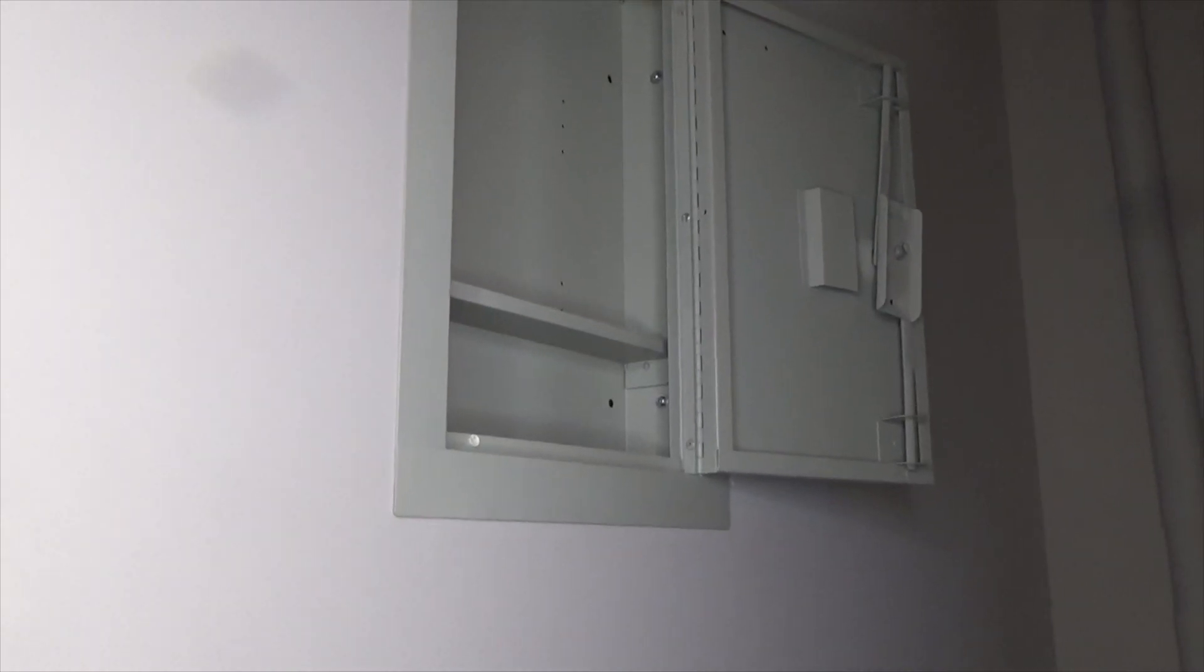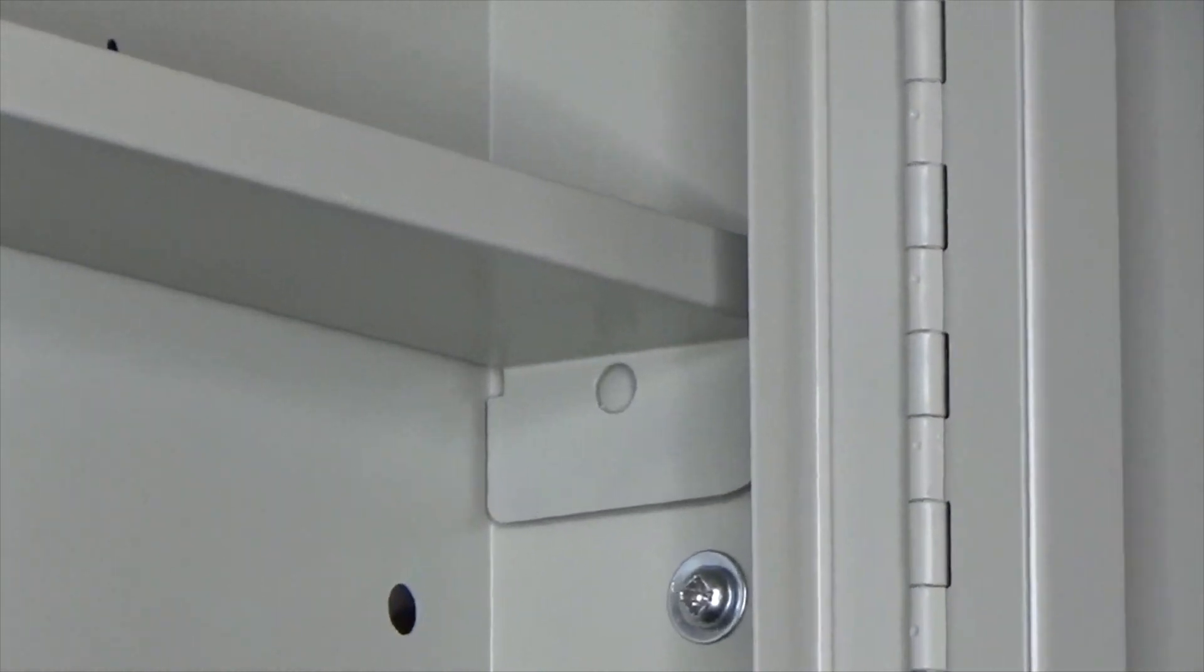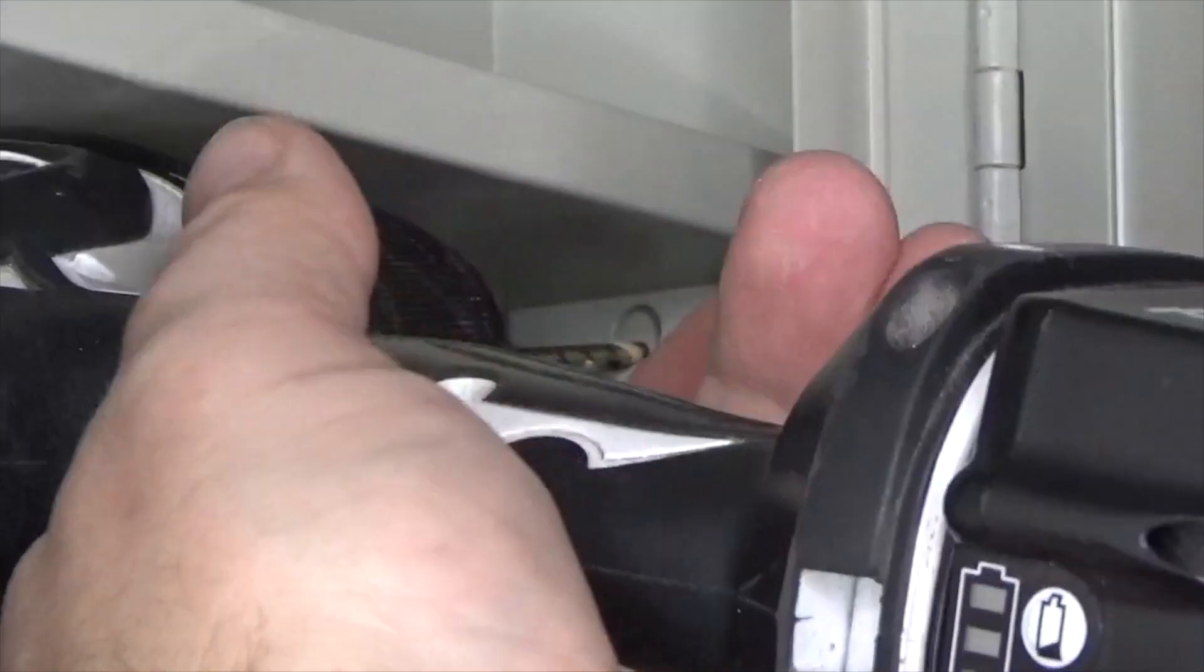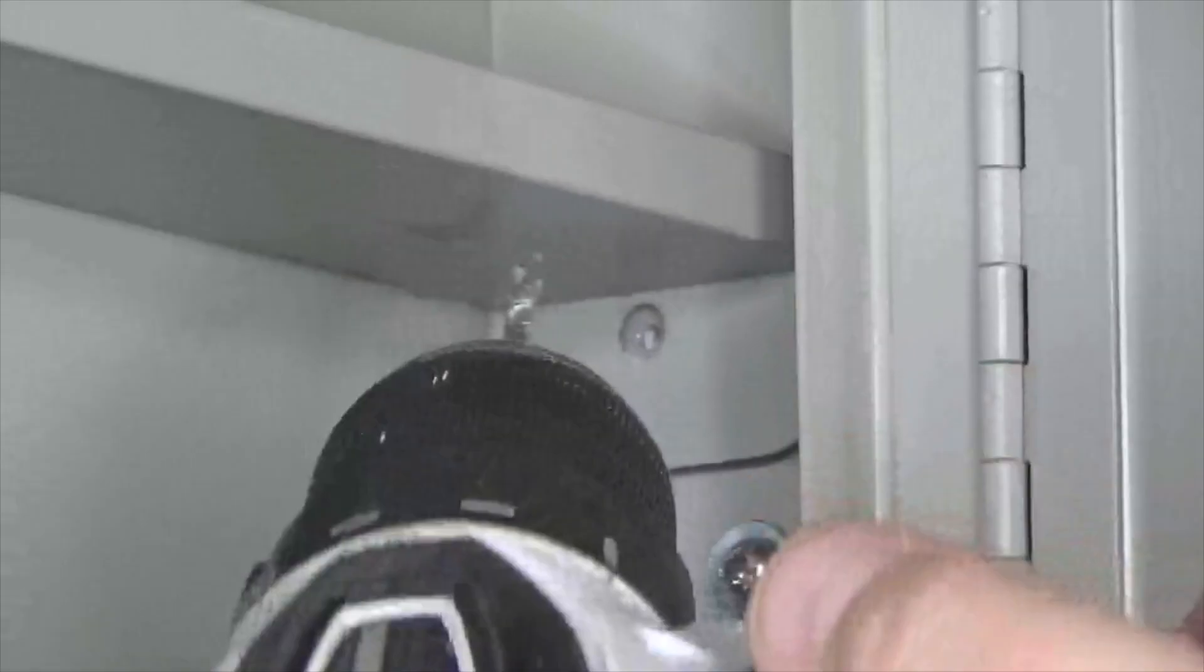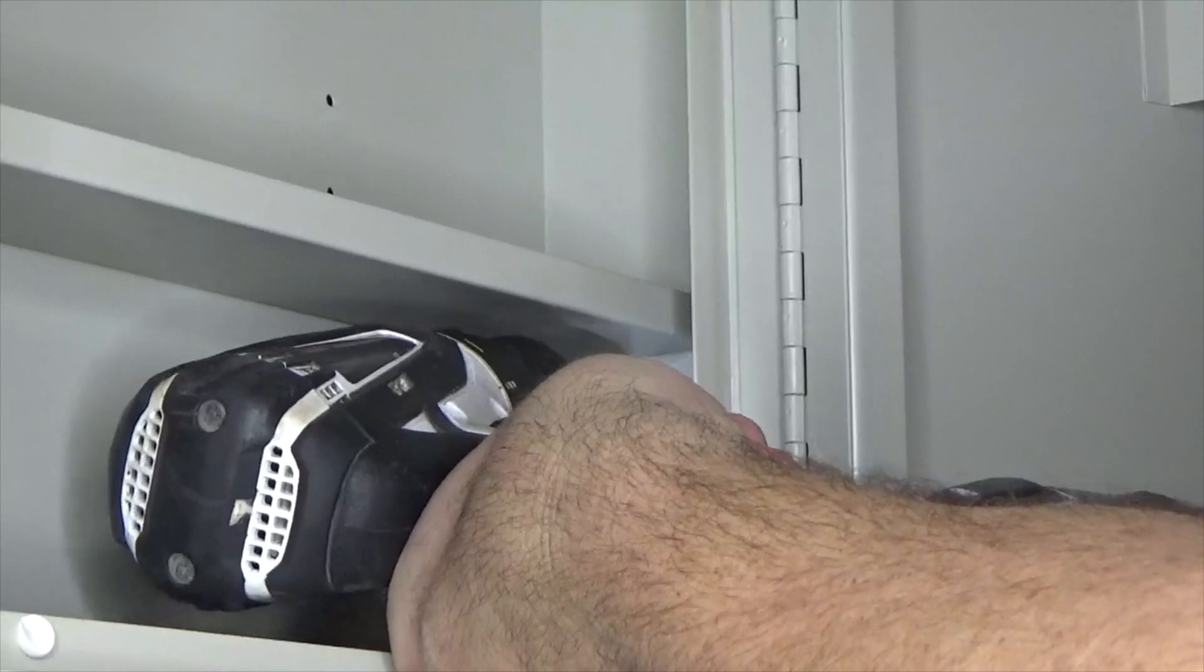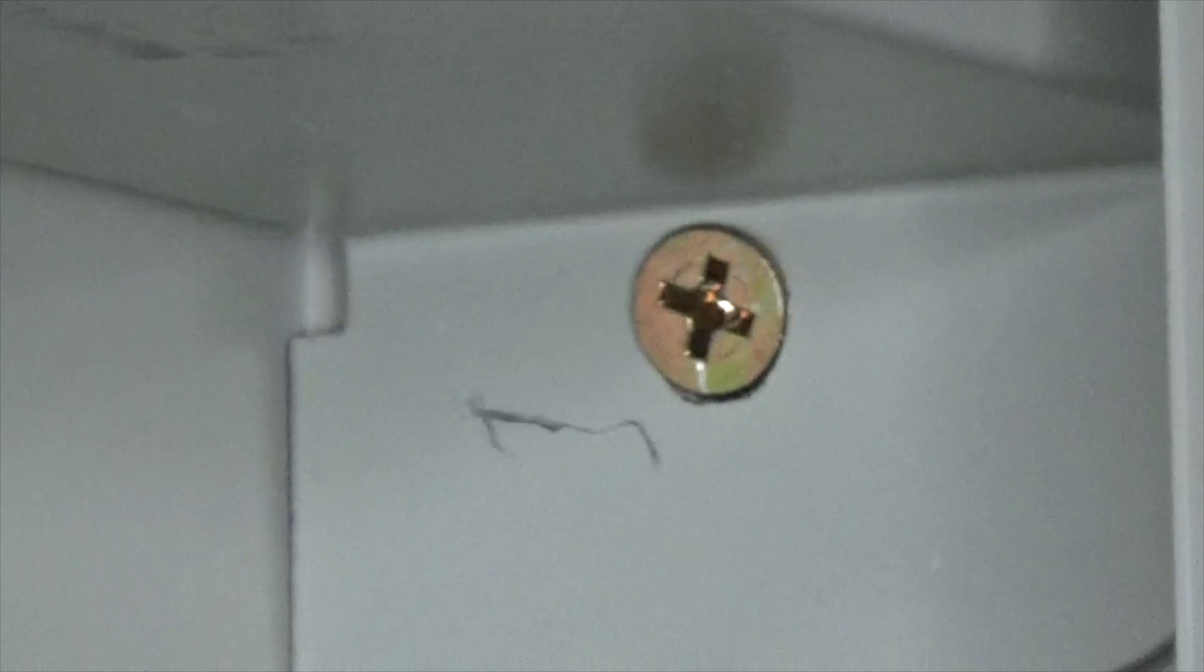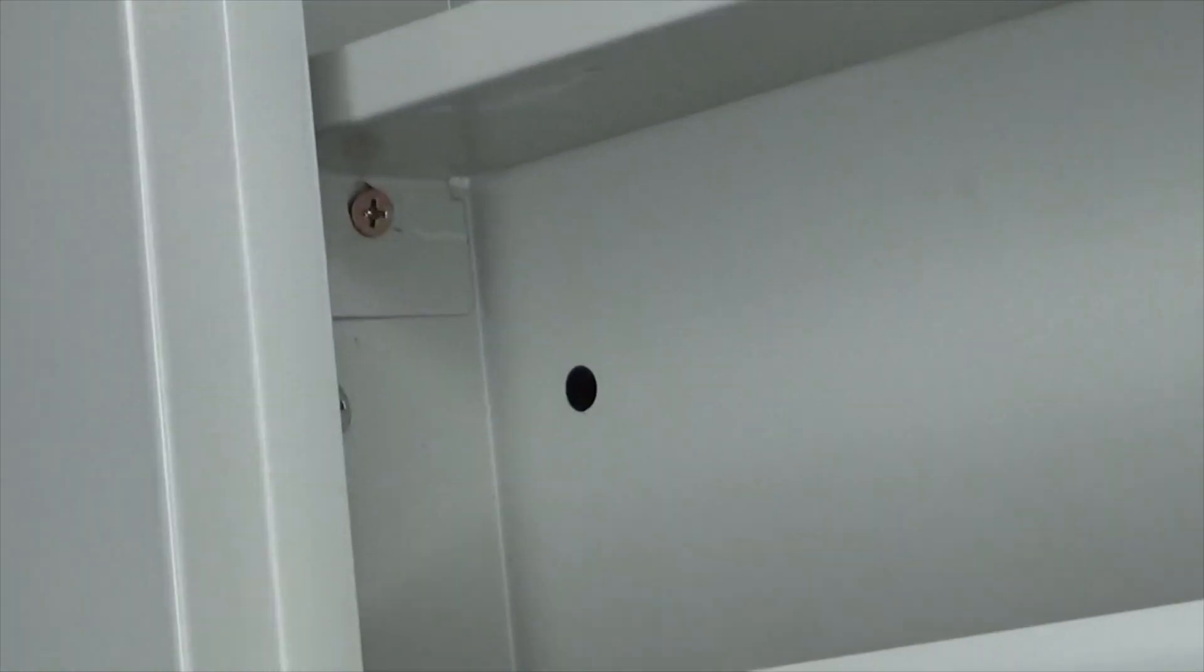If you want extra security for holding heavier items, I recommend adding another screw to the side mounting holes of the shelves. To do this, drill a hole using a drill bit that is slightly smaller in diameter than your screw. I decided to use a 2 inch deck screw for securing this shelf into place. Repeat this process on the other side of the shelf.